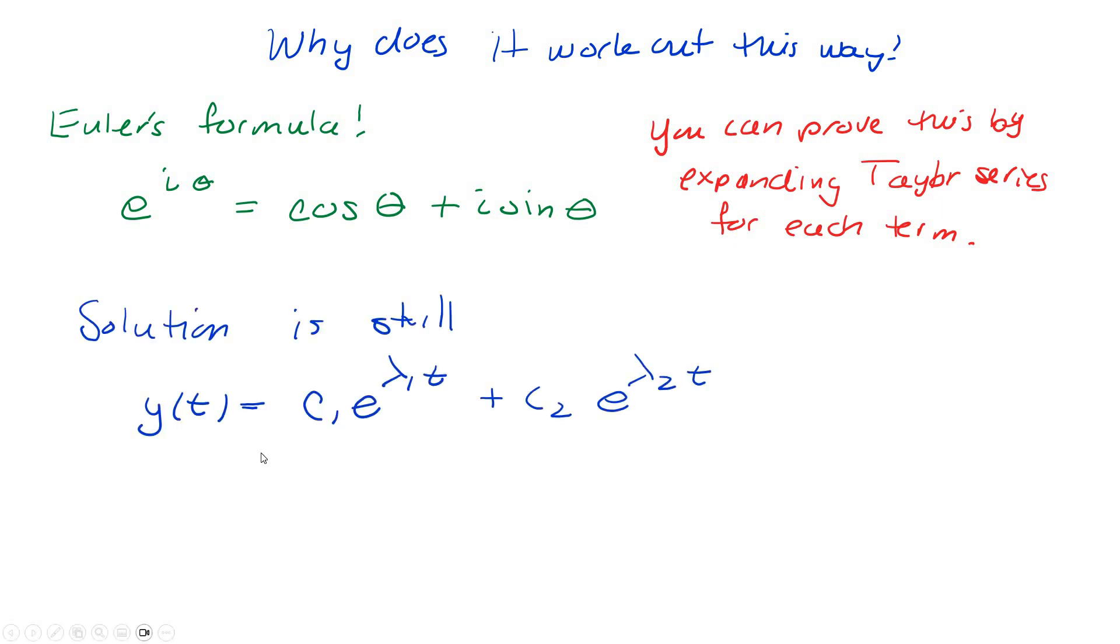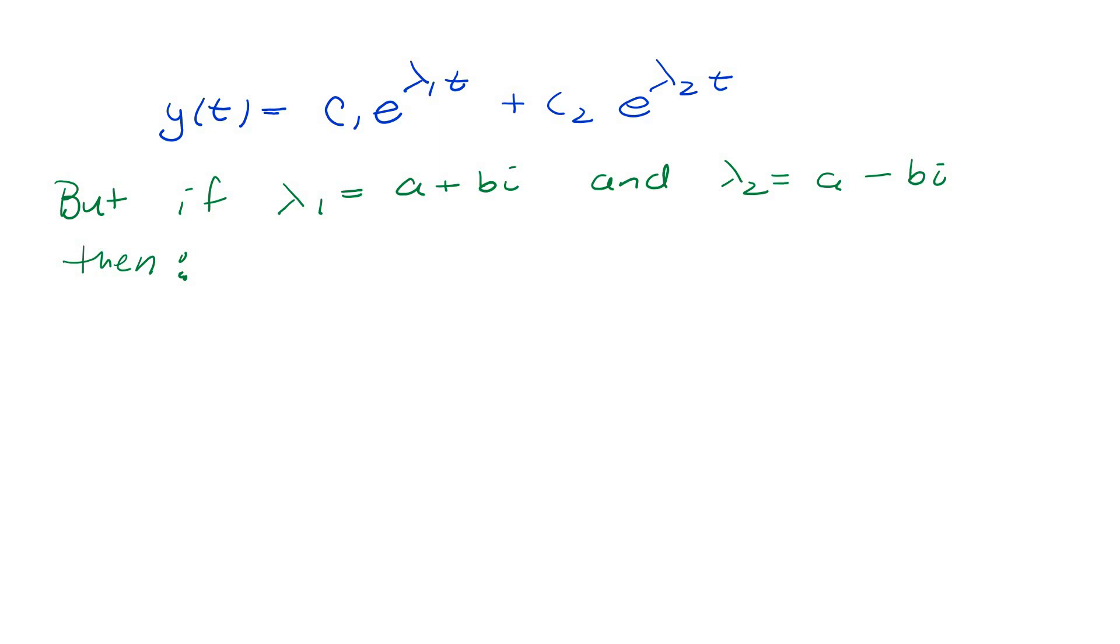The solution is still actually of the form lambda 1, lambda 2t. It's still of that form because if I substitute a plus bi and a minus bi into the lambdas, I get something like this.